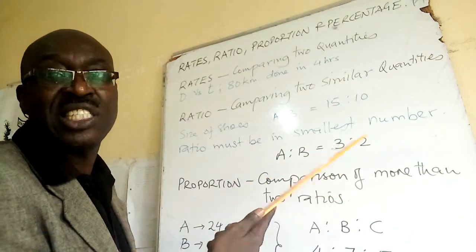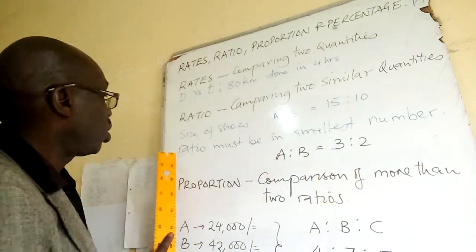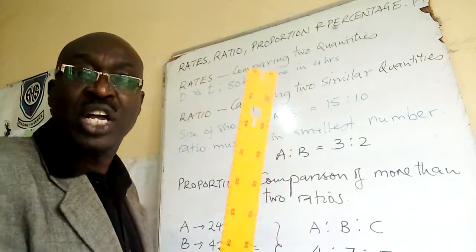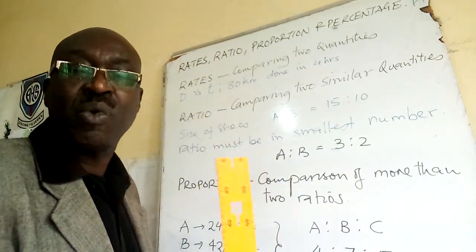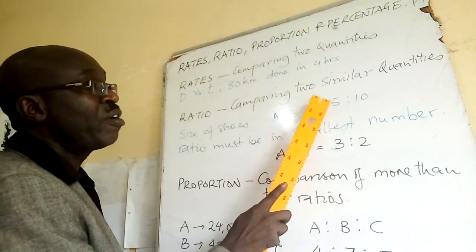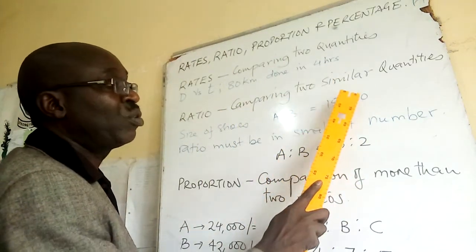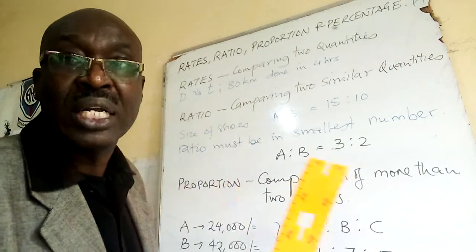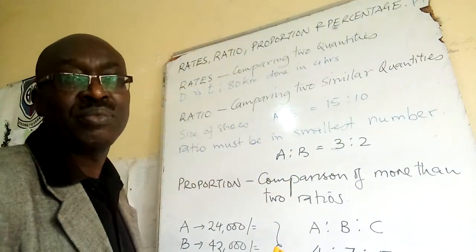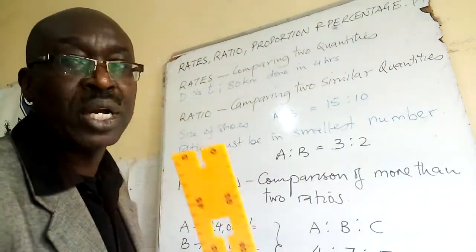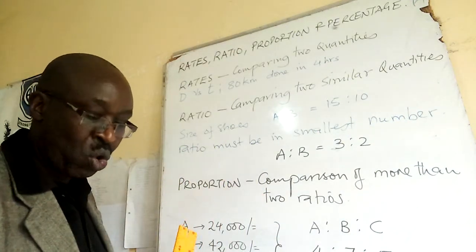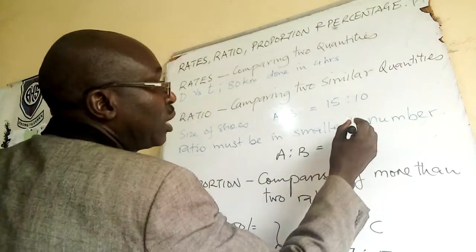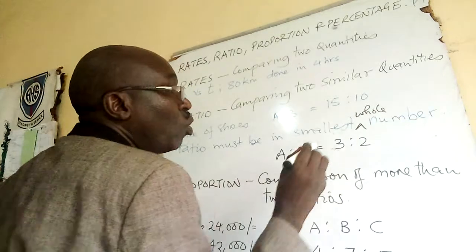Note: ratio must be in the smallest whole number. When you are writing a ratio, it must be in the smallest number possible. Five goes into 15 three times and five goes into 10 two times. So it is the smallest whole number — not decimal, but the smallest whole number.